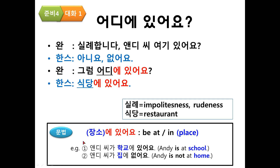For example, number one, 1번: Andy 씨가 학교에 있어요. The meaning is Andy is at school. 2번: Andy 씨가 집에 없어요. So, Andy is not at home.